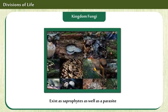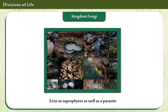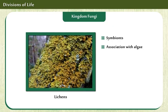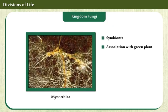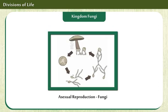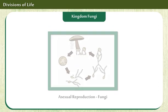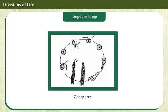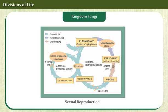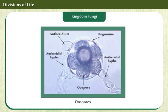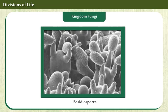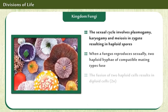Kingdom Fungi exist as saprophytes as well as parasites. They can also live as symbionts in association with algae as lichens and with green plants as mycorrhiza. Asexual reproduction is by spores called conidia, sporangiospores, or zoospores. Sexual reproduction occurs by oospores, ascospores, and basidiospores. Some of the features are displayed on the screen.